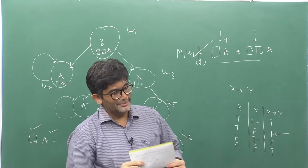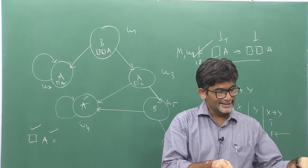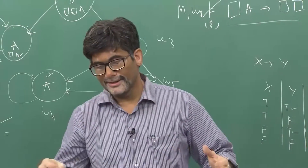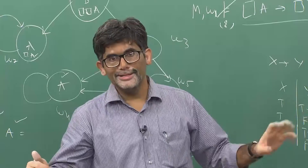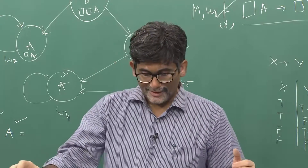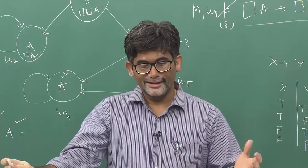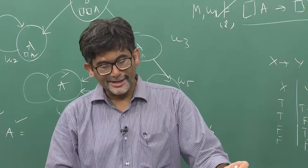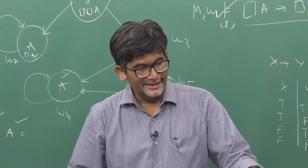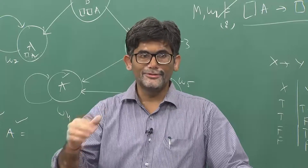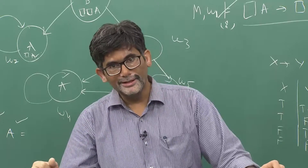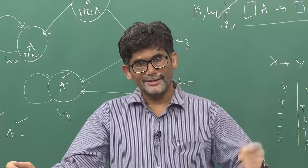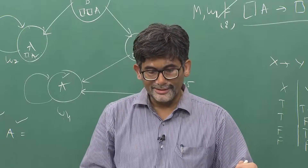If a formula does not hold in one possible world, that is sufficient to say it does not hold in the Kripke model. A Kripke frame consists of a given set of worlds and how those worlds are related to each other. The key rule remains: if no world is accessible to a given world, all formulas starting with necessity are true, and all formulas starting with possibility are false.